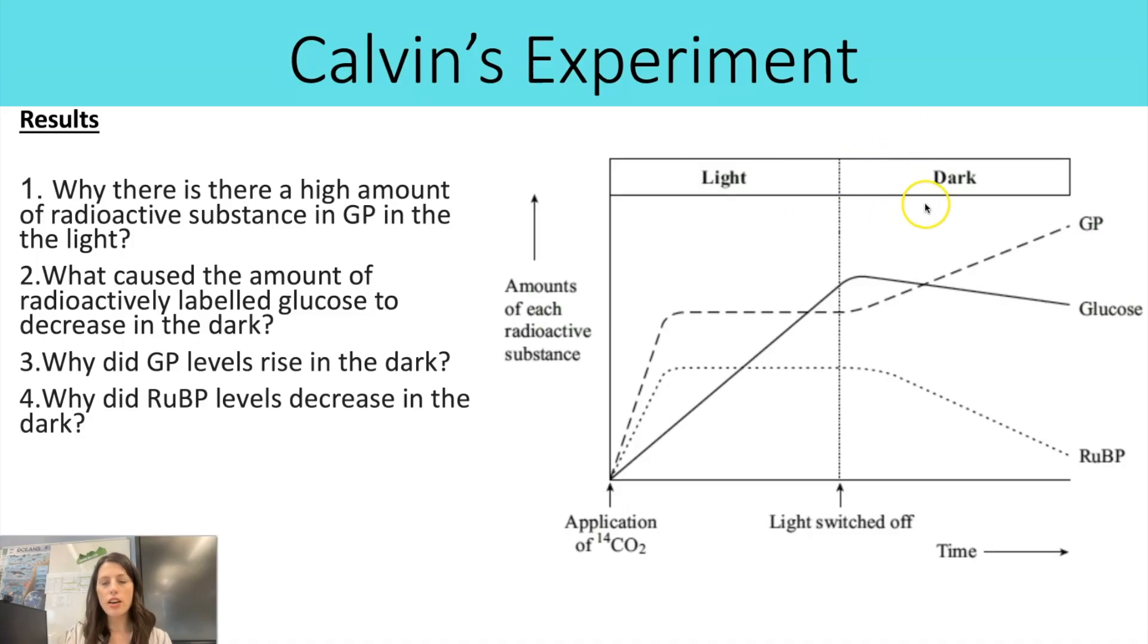So when it goes dark, that means the light dependent reactions would stop. And that means you won't be getting any reduced NADP or ATP. And those two compounds are required in the Calvin cycle to reduce GP into TP. So that is what is happening here. That GP is not being reduced to form triose phosphate or TP. And therefore we've got an increase in GP, we'll have a decrease in TP. And because there's a decrease in TP, the amount of glucose has decreased.